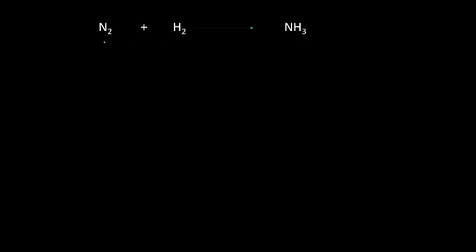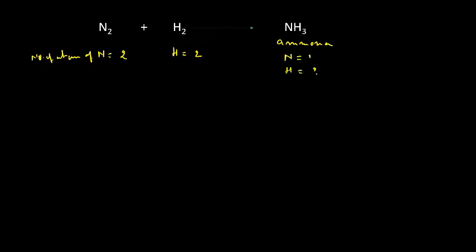Nitrogen, N₂ molecules, react with hydrogen molecules and we get ammonia. Here, the number of nitrogen atoms equals two atoms, and hydrogen is two atoms. On the products side, nitrogen is one and hydrogen is three.